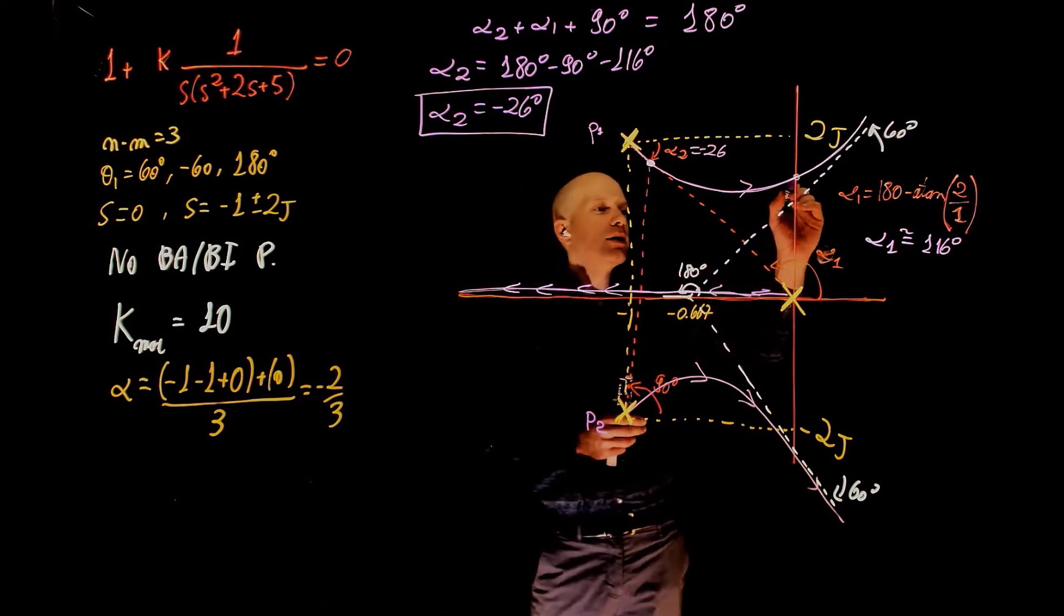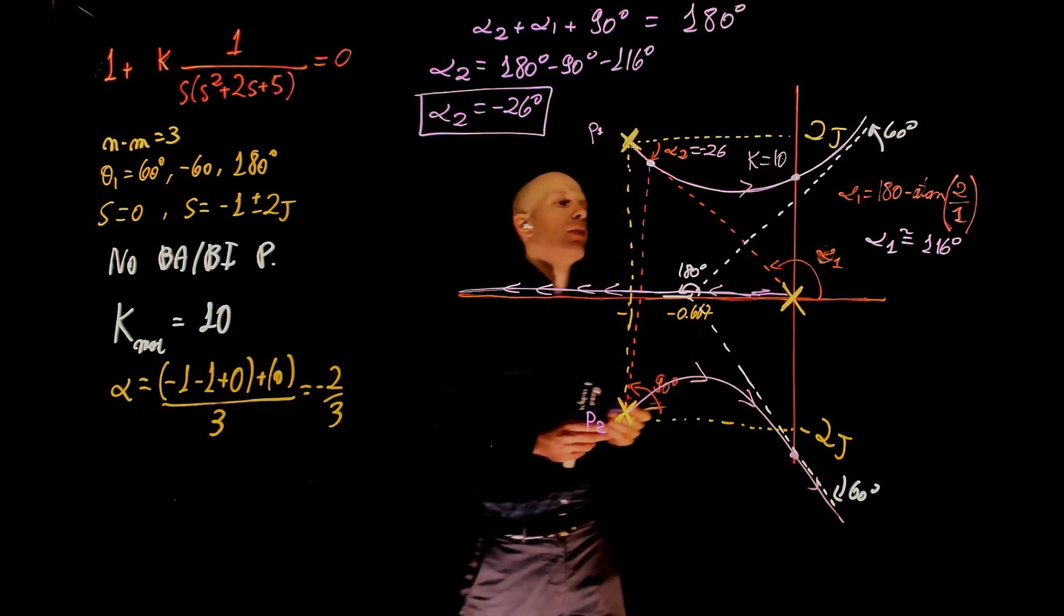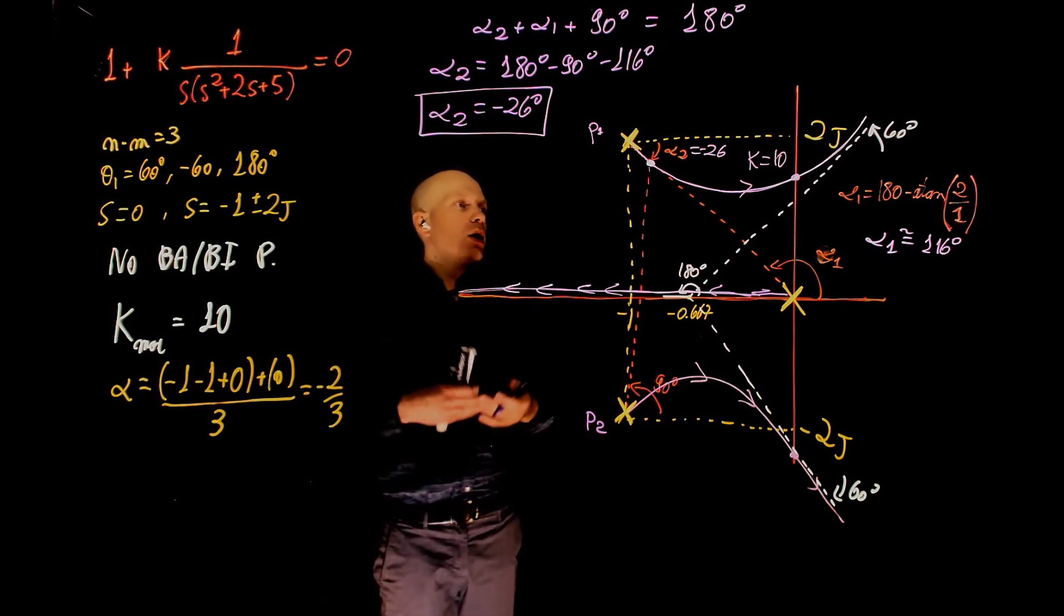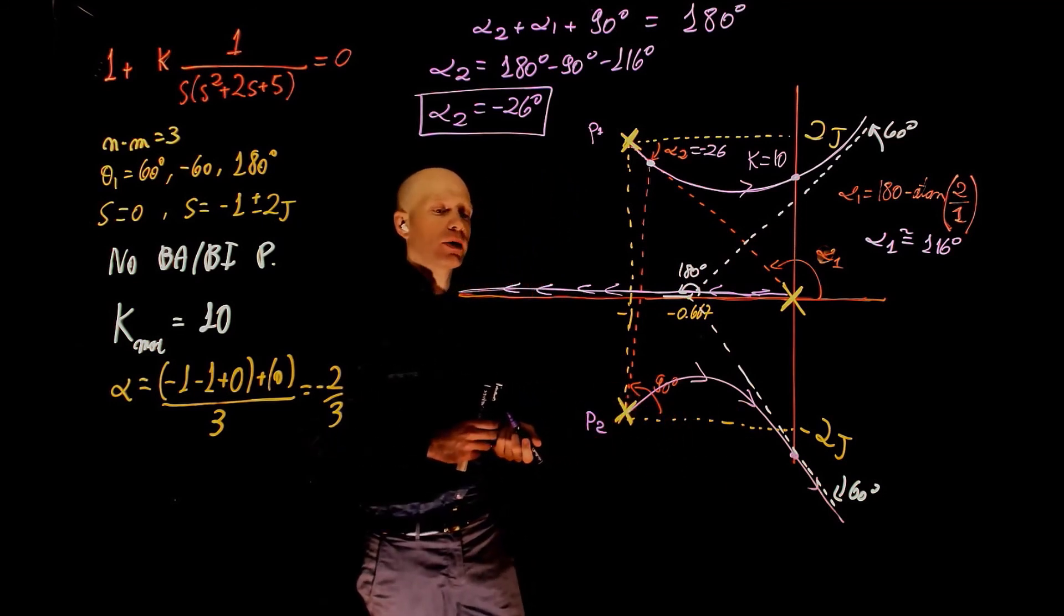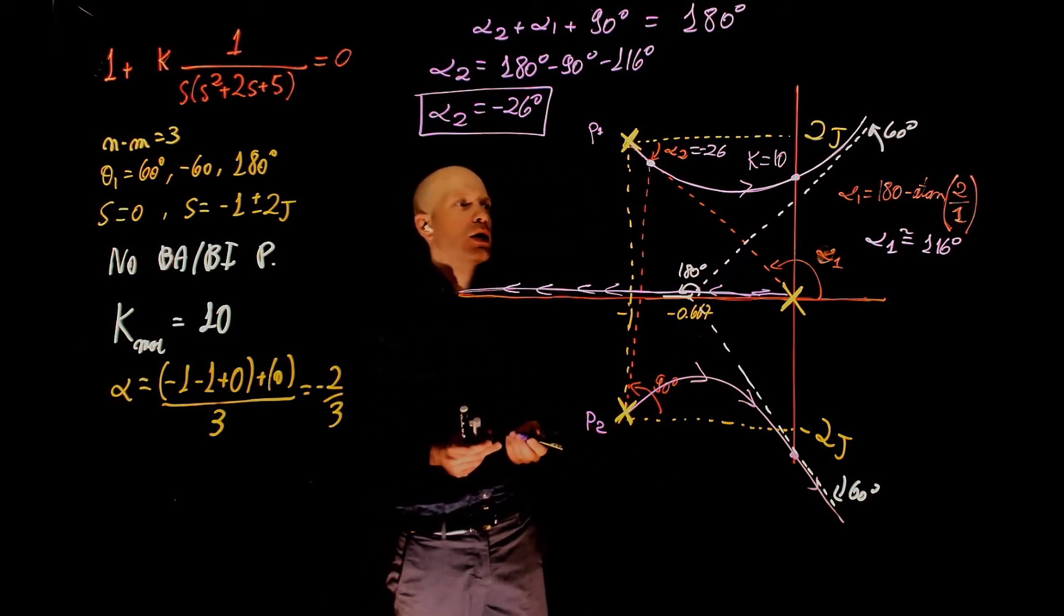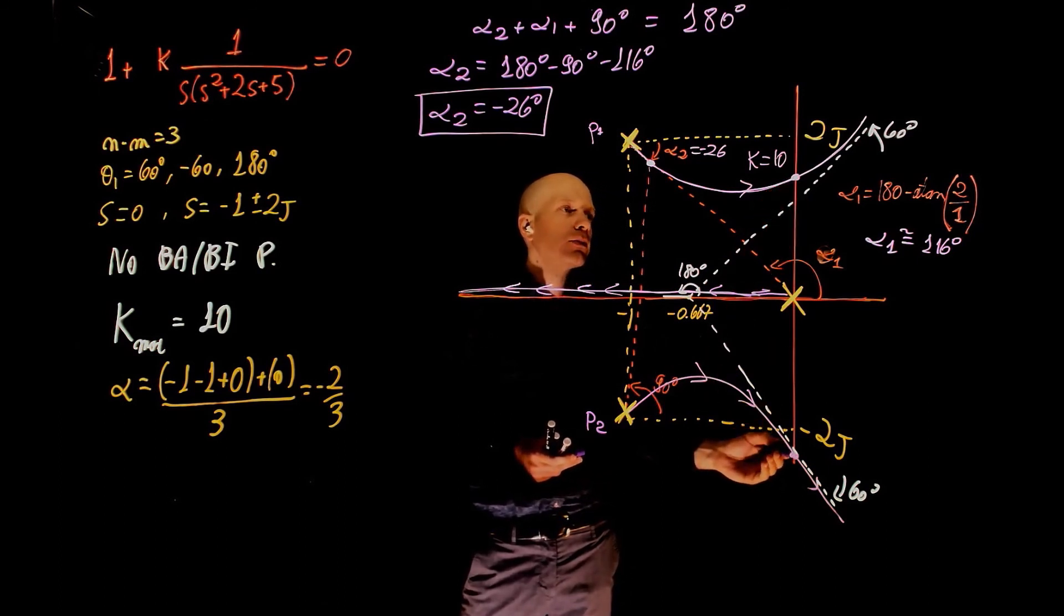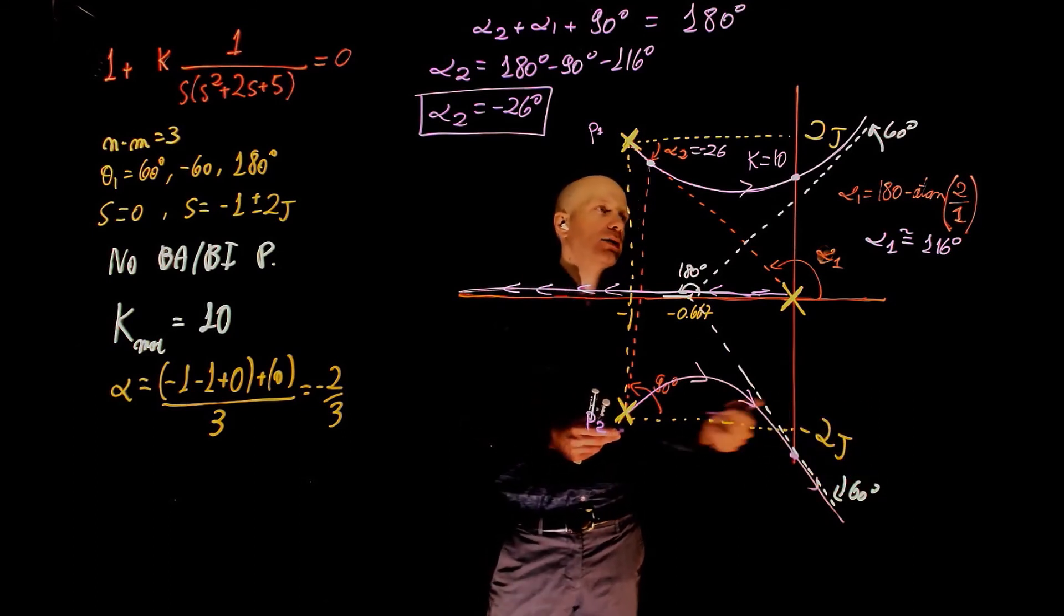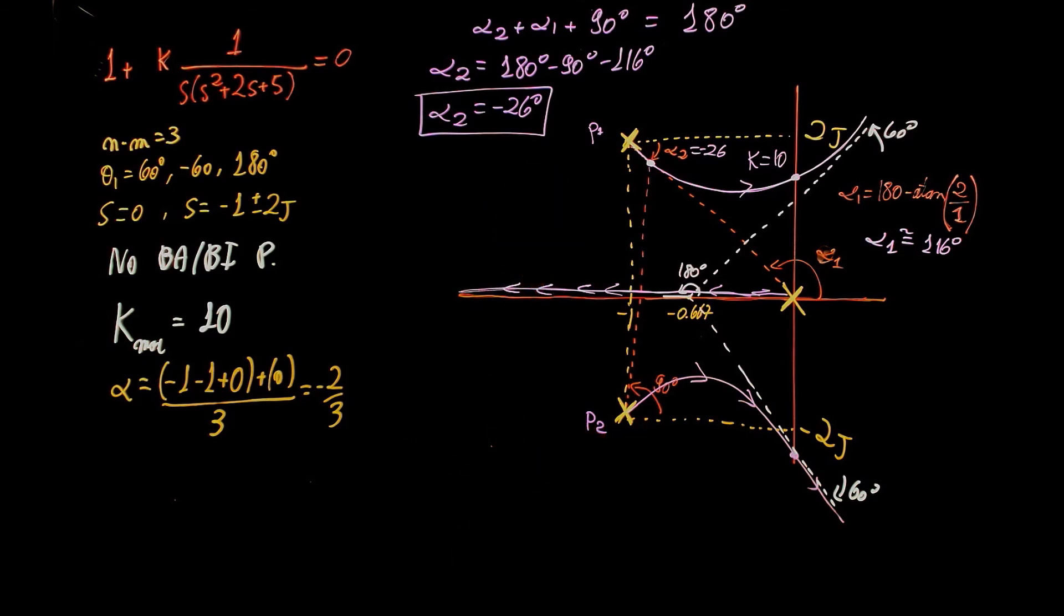The value of k at this point here is k equals 10. So if k is between 0 and 10, the system is underdamped because of the presence of this complex conjugate poles. Even though we have a real pole here, the complex conjugate poles are enough to characterize an underdamped system. When k equals 10, then the poles will lie here and the system is critically stable or marginally stable. Past that, k greater than 10 gives an unstable system.